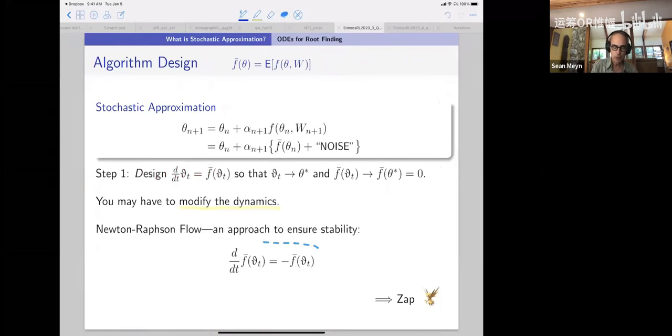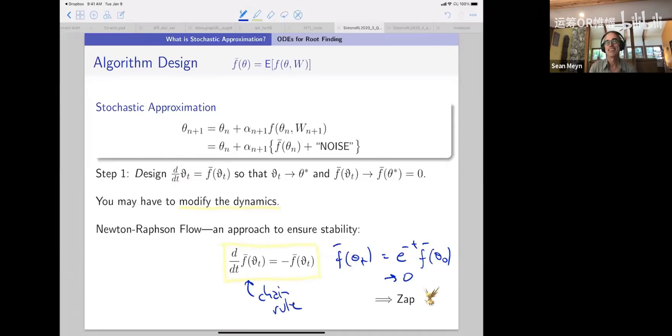You might have to modify the dynamics. And here's one example. You can go and say, I want my algorithm to do this. Do you see what I'm doing here? That's a linear differential equation. It converges, right? You can solve it. You can apply the chain rule. And you get an algorithm. And there's something that's called Zap Q learning. It turns out that we didn't, that wasn't our intention in the beginning, but later on, we realized that's all we were doing. We're saying, let's force this thing to be a linear system. So that's an example of designing the dynamics.